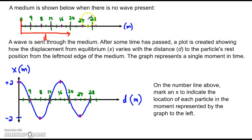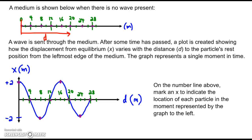So when we say d equals 20 meters, we're describing this purple particle right there — the one that has that rest position. A wave is sent through the medium. After some time has passed, a plot is created showing how the displacement from equilibrium varies with the distance to the particle's rest position from the left edge. The graph represents a single moment in time.